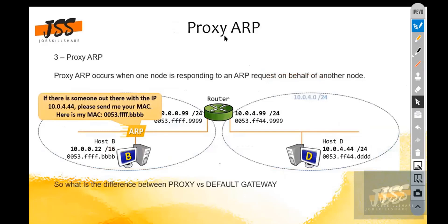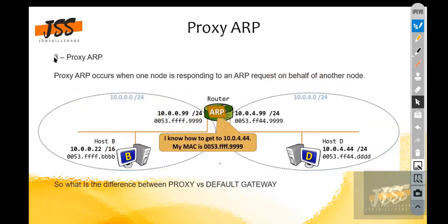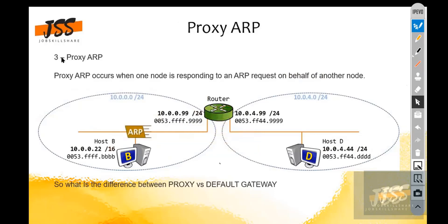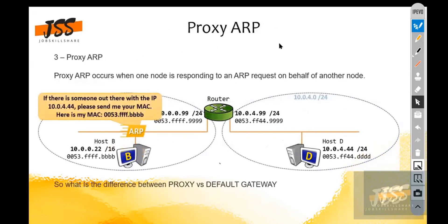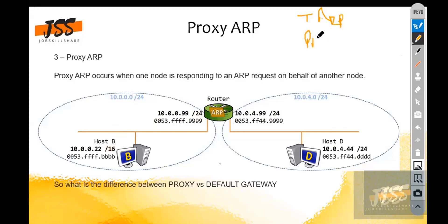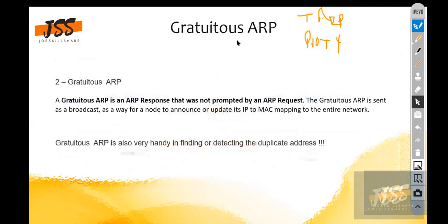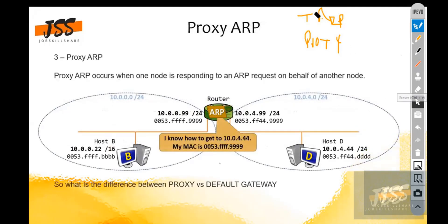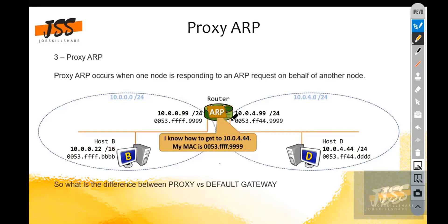Let's talk about Proxy ARP. We have traditional ARP, then Proxy ARP, and the last one is Gratuitous ARP. So let's discover what Proxy ARP is first. The criteria for Proxy ARP is something we'll explore now.